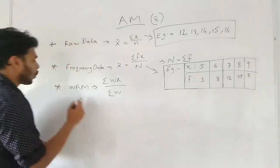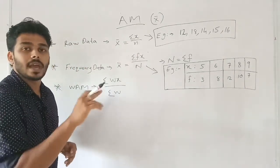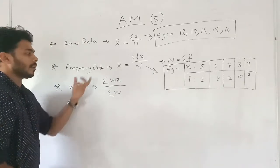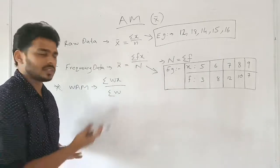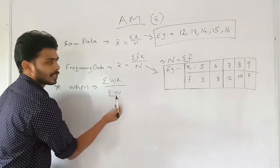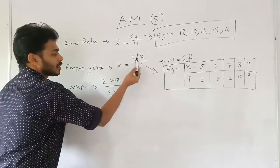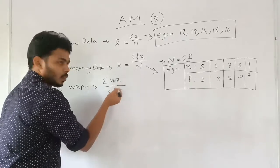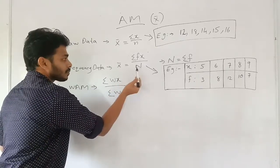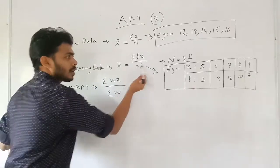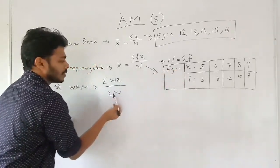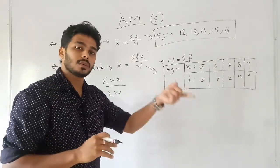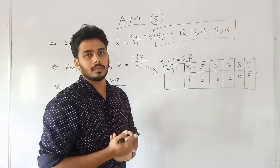Weighted arithmetic mean — WAM. The equation is x̄ = Σwx / Σw, where w is the weight and x is the value. Σwi is the sum of weights, similar in structure to the frequency method.